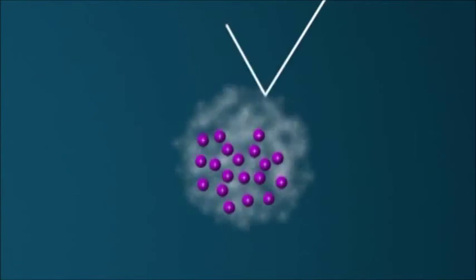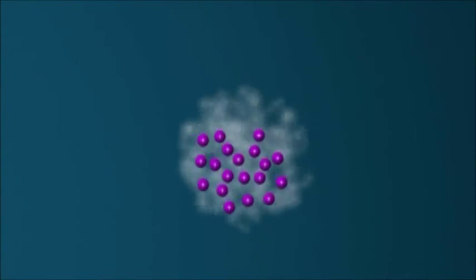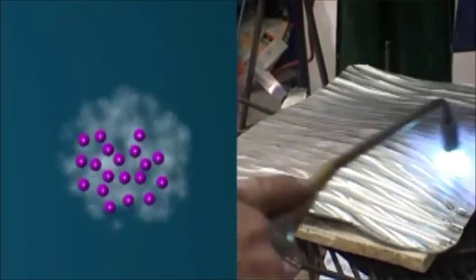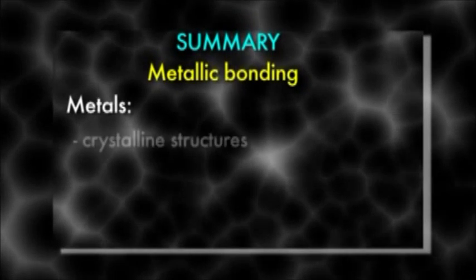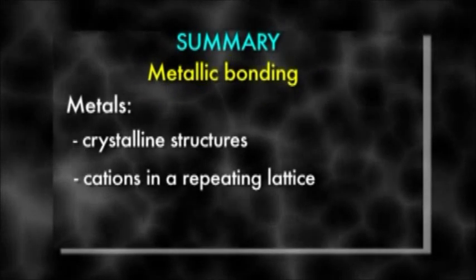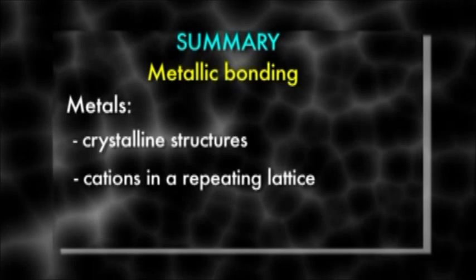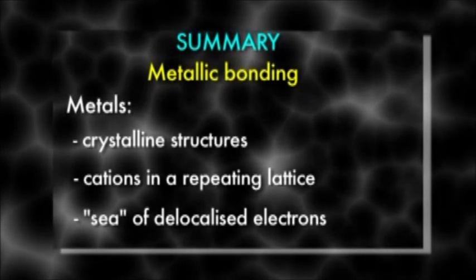This sea of electrons also reflects light, giving metals their shiny luster. Metals are crystalline structures, with cations arranged in a repeating lattice, surrounded by a sea of delocalised valence electrons.